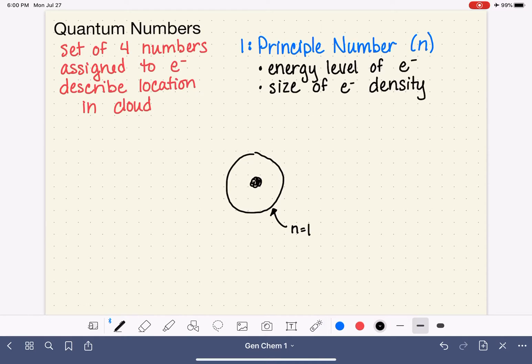We call this particular area n equals 1. And then around that, encompassing that, we have a slightly larger area of electron density that's higher in energy. We call that space n equals 2. And that just continues on and on, theoretically to infinity.